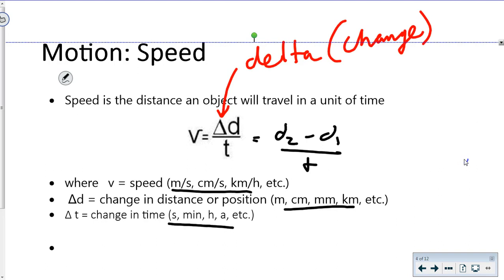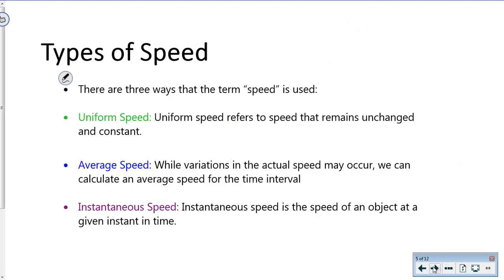There are three types of speed. Uniform speed is what we'll use in most problems. Uniform speed and average speed can be used interchangeably. Uniform speed means your speed is constant.